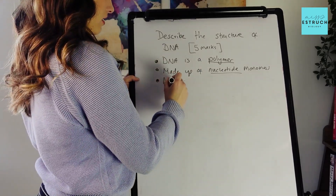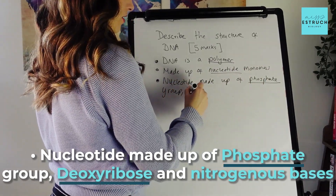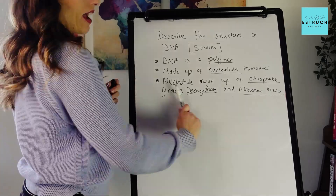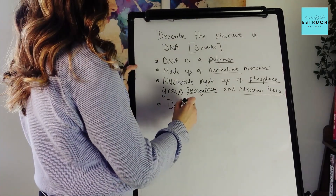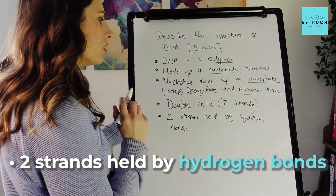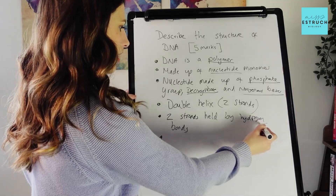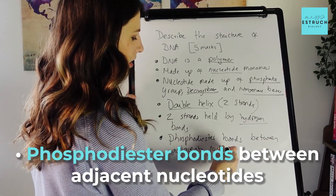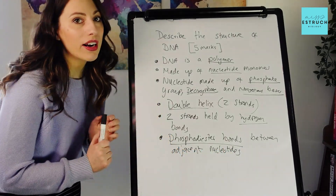I'm going to describe that nucleotide next: it's made up of a phosphate group, deoxyribose, and nitrogenous bases. So so far I've said it's a polymer with nucleotide monomers, and those are the components of the nucleotide. Next I'll talk about the polymer structure — double helix, with two strands held by hydrogen bonds. I also haven't talked about phosphodiester bonds yet, so I'll put that in too: phosphodiester bonds between adjacent nucleotides. That gives me six bullet points — one extra as insurance.